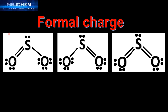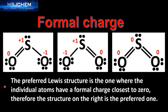Next we'll have a look at one more example. Here are three possible Lewis structures for SO2, sulfur dioxide. Let's calculate the formal charge on each atom to find the preferred Lewis structure. In the left structure: the first oxygen has a formal charge of zero, the sulfur is plus one, and the second oxygen is negative one. In the middle structure: the first oxygen is negative one, the sulfur is plus one, and the second oxygen is zero. In the right structure, the formal charge on the oxygen, the sulfur, and the second oxygen is all zero. The preferred Lewis structure is the one where atoms have a formal charge closest to zero, therefore the structure on the right is the preferred one.